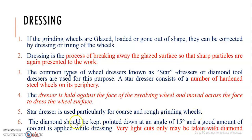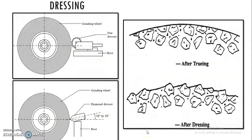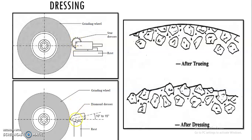Sometimes a diamond tool is also used, which is pointed down at an angle of 15 degrees. During this operation, a good amount of coolant is applied and only a very light cut may be taken with diamond tools. The grinding wheel, subjected to glazing and loading, loses its cutting ability. To improve its cutting ability and break the glassy surface around its periphery, it is brought in contact with the star dresser or a diamond-type tool.